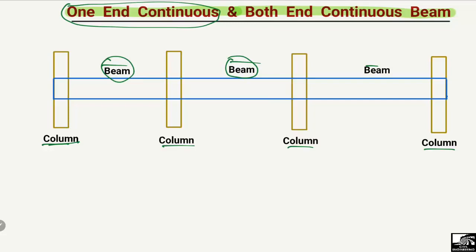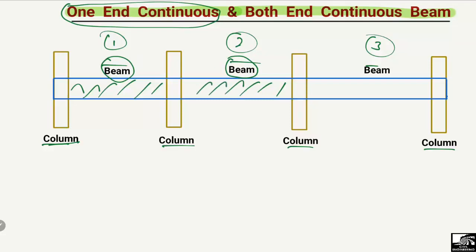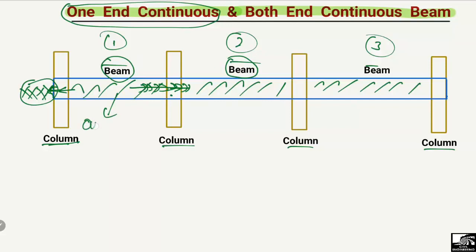For example, we have three beams — one, two, and three — three horizontal members. If we look at the first beam, this beam has been continuous on one end: it goes to this column and continues. But on the other side, it is not continued — it is continuous on this end but discontinuous on the other end. So this type of beam is known as the one-end continuous beam.